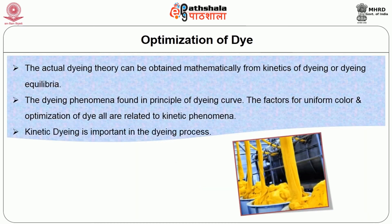The actual dyeing theory can be obtained mathematically from kinetics of dyeing or dyeing equilibria. Dyeing equilibria is divided into three parts in textile material: the Langmuir isotherm, the Freundlich isotherm, and the Nernst isotherm. The Langmuir isotherm is mostly involved in protein fibers with respect to acid and basic dyes; the Freundlich isotherm is mostly involved in cellulosic material with respect to direct and reactive dyes; and the Nernst isotherm is involved with respect to polyester and nylon material with dispersed dyes.